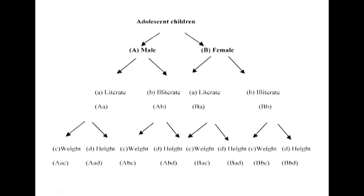Manifold or multiple classification: in this method, data is classified using one or more qualities. First, the data is divided into two groups using one of the qualities. Then, using the remaining qualities, the data is divided into different subgroups. For example, adolescent children can be divided into male and female; further into male literate and male illiterate, female literate and female illiterate; and further into male literate by weight and height, male illiterate by weight and height, female literate by weight and height, and so on.